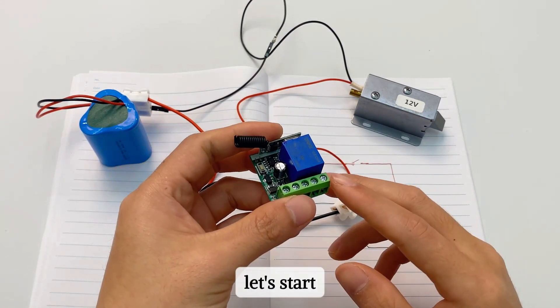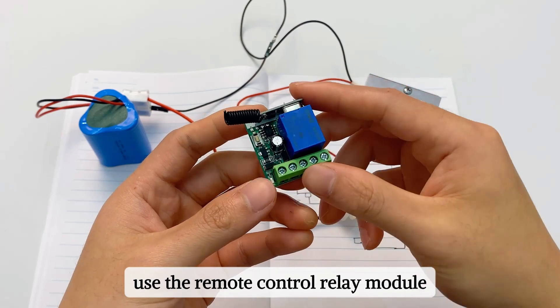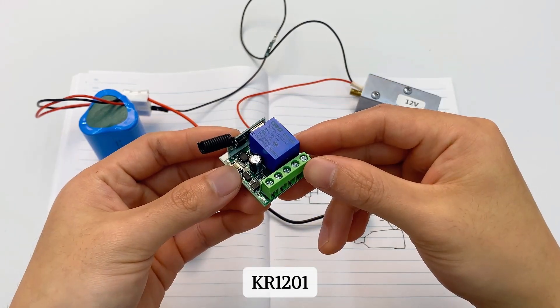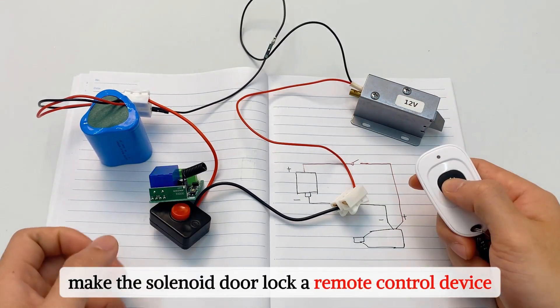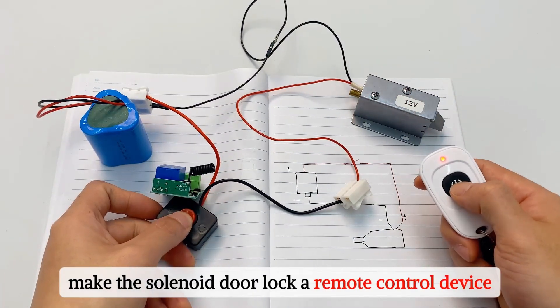Next, let's start. Use the remote control relay module KR-1201, equivalent to a switch, make the solenoid door lock a remote control device.